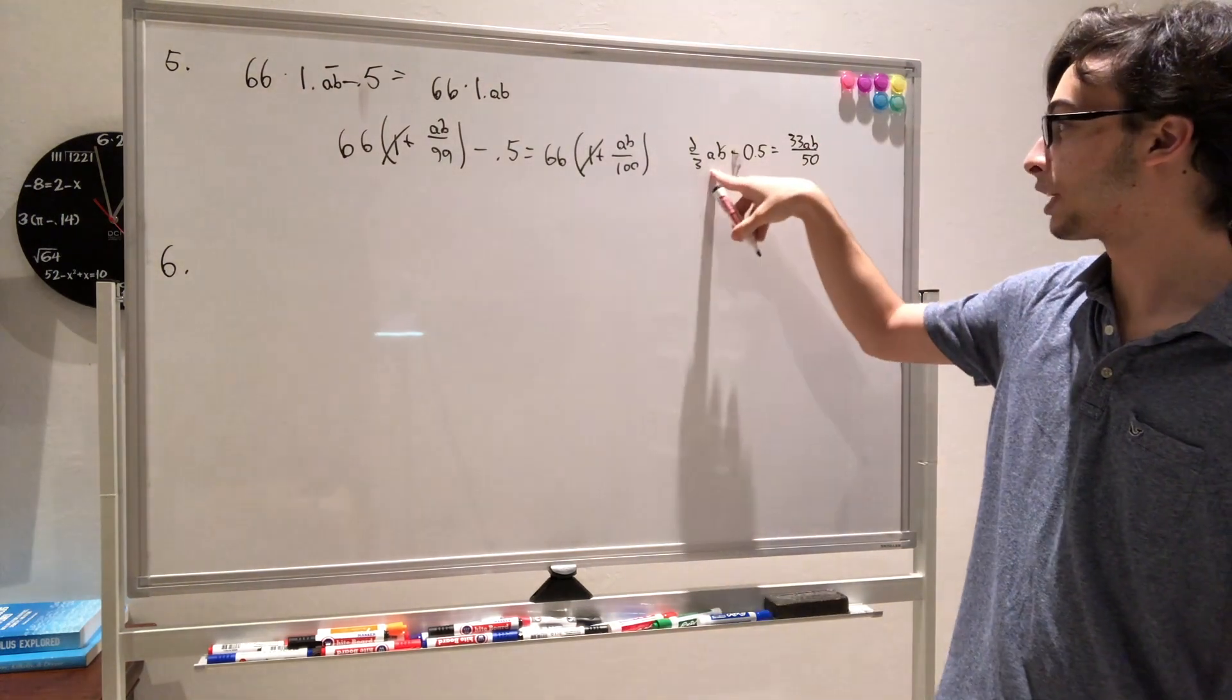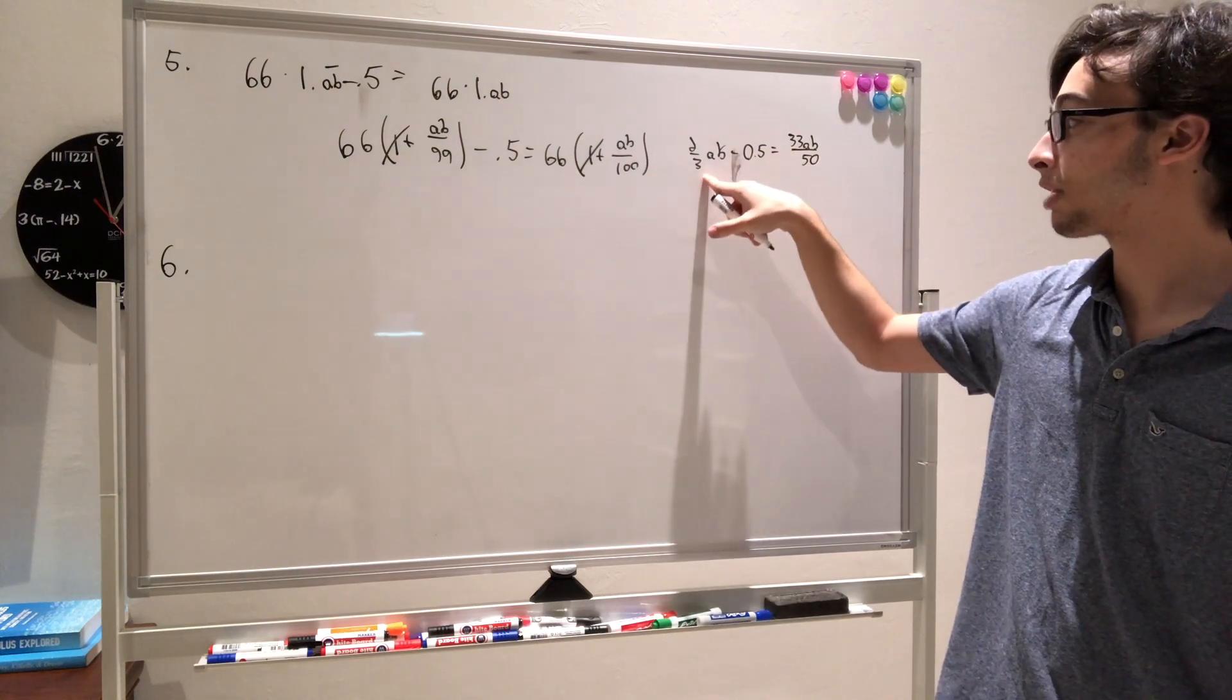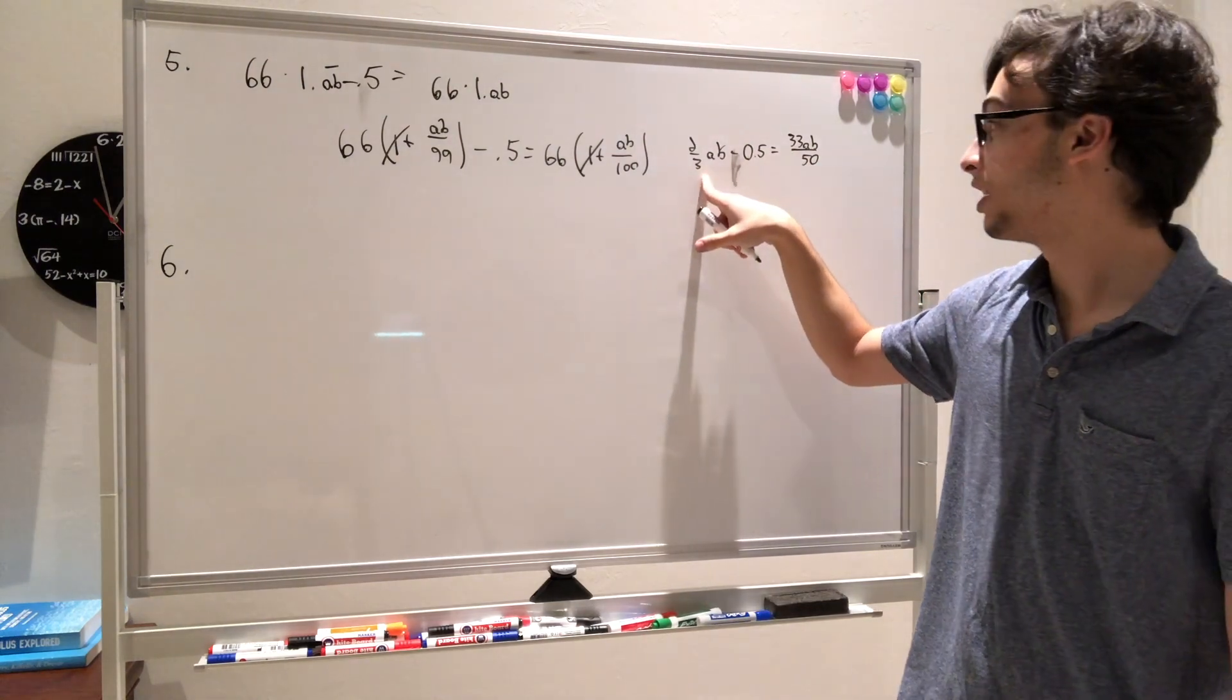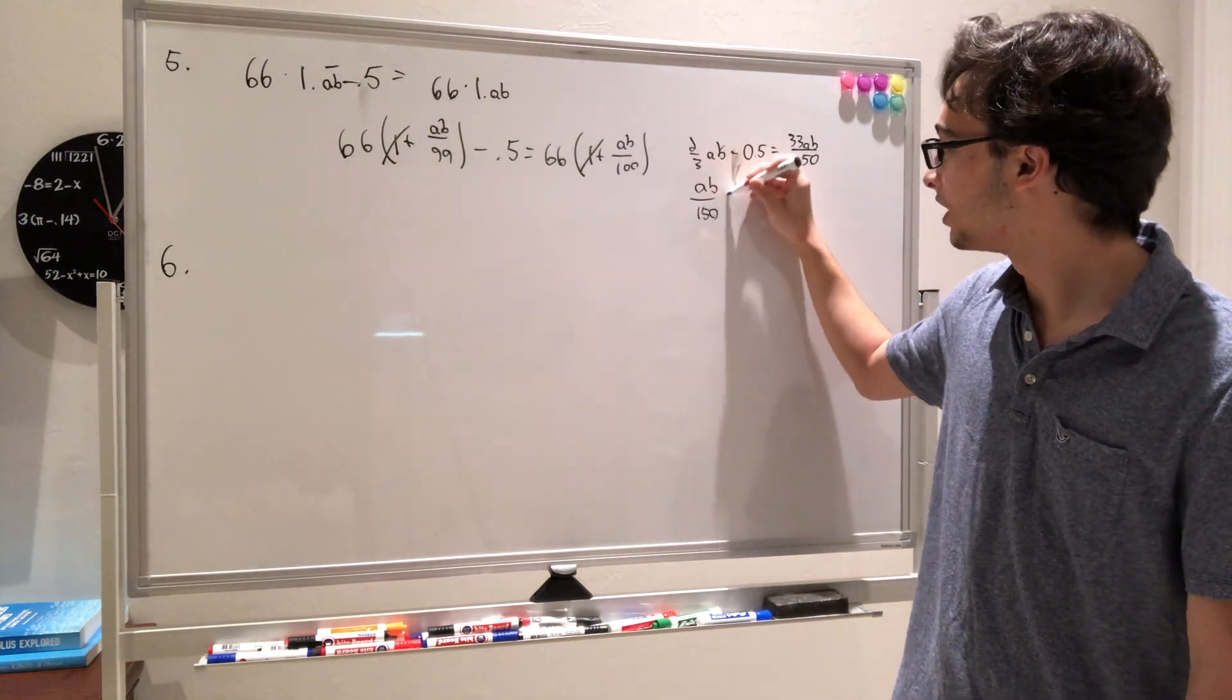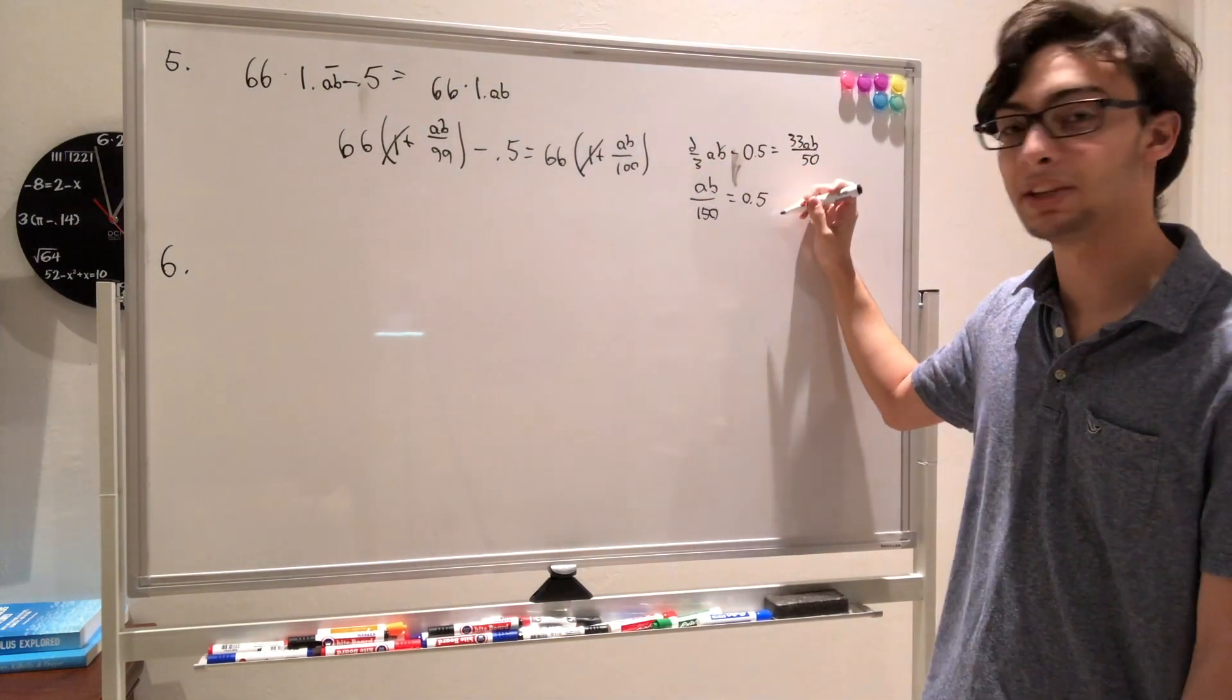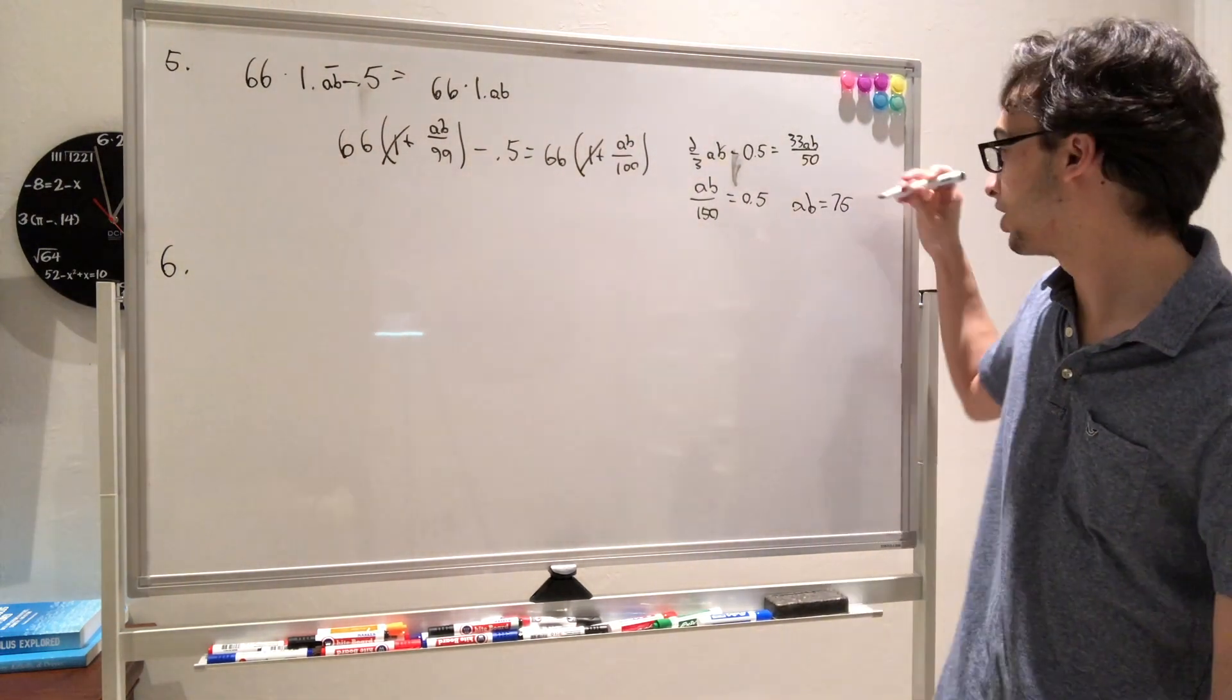So now what we need to do is bring this over here. When we do this, we're going to have 99 AB and here 100 AB over 150. So this is going to give us that AB over 150 is equal to 0.5, which means that AB is going to be equal to 75. We're done with the problem, and the answer is E.